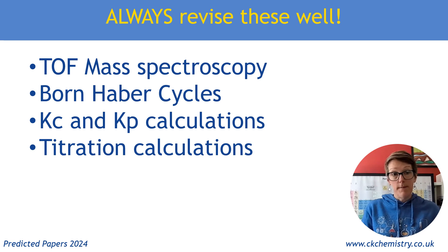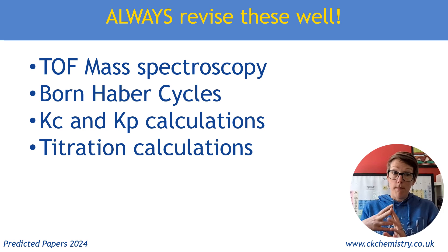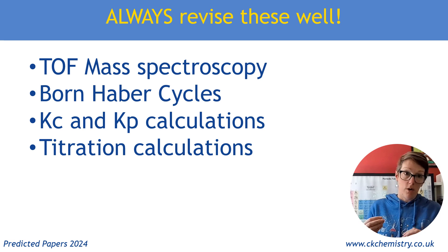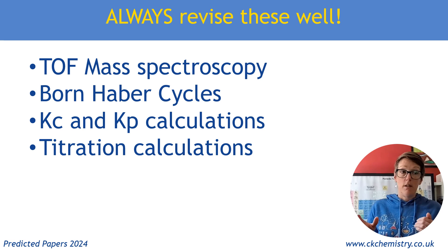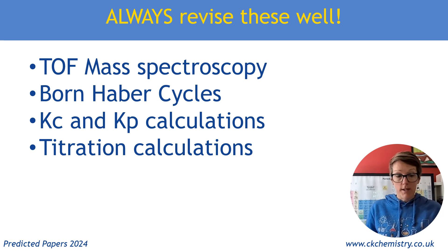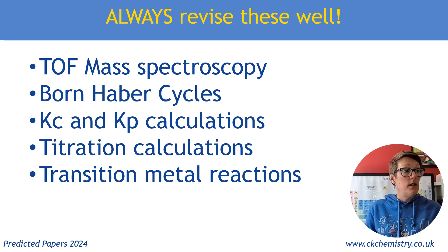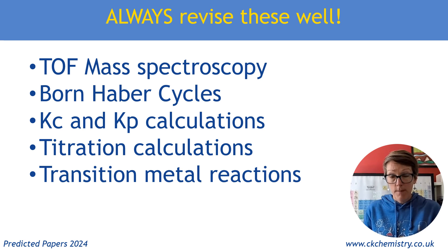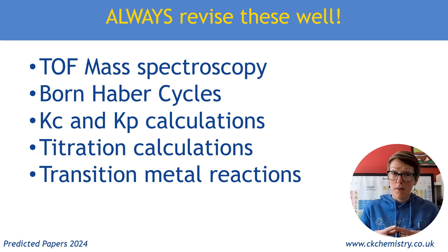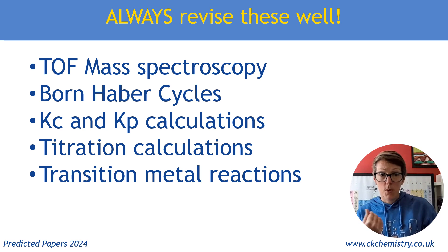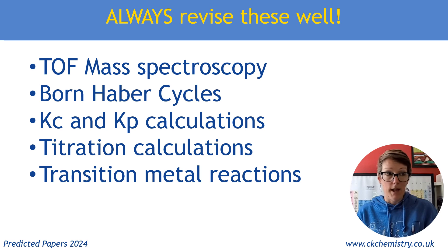Titration calculations — dead set — redox titrations or acid-base titrations, maybe both. Make sure that you're aware of how to do things like find the Mr of an unknown compound using a titration, or finding the number of waters of crystallization, which is another really very common type of question. There are loads of practice ones out there, so make sure that you have practiced. Transition metal reactions, of course — don't forget that aluminium is not a transition metal, but you are expected to know about the precipitates that it forms and its acid-base behavior.